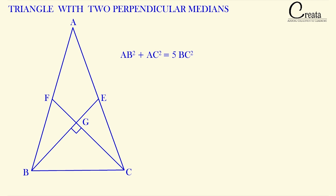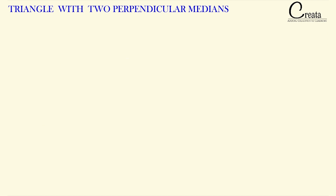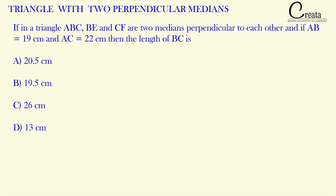Let's take a question to see the implementation of this formula. In triangle ABC, BE and CF are two medians perpendicular to each other. AB = 19 cm and AC = 22 cm. Find the length of BC. The four choices are: (A) 20.5 cm, (B) 19.5 cm, (C) 26 cm, (D) 13 cm.